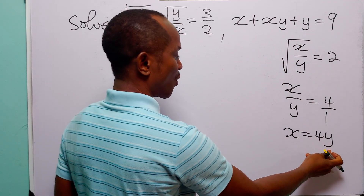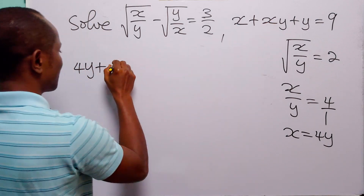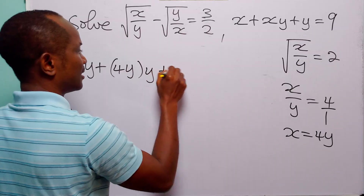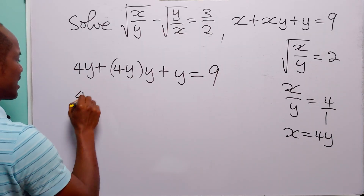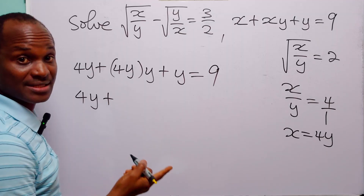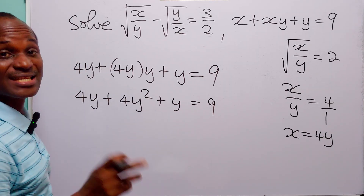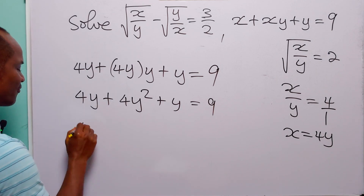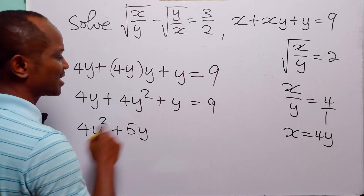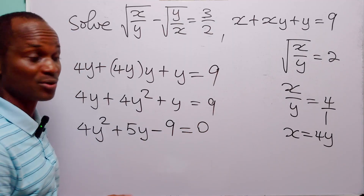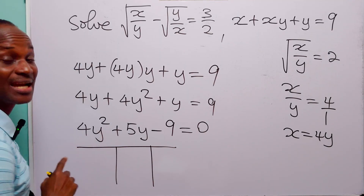Since x equals 4y, we replace x with 4y in the second equation. We have 4y plus 4y times y, plus y, equals 9. That gives 4y squared plus 4y plus y equals 9, and since 4y plus y is 5y, rearranging we have 4y squared plus 5y minus 9 equals 0.